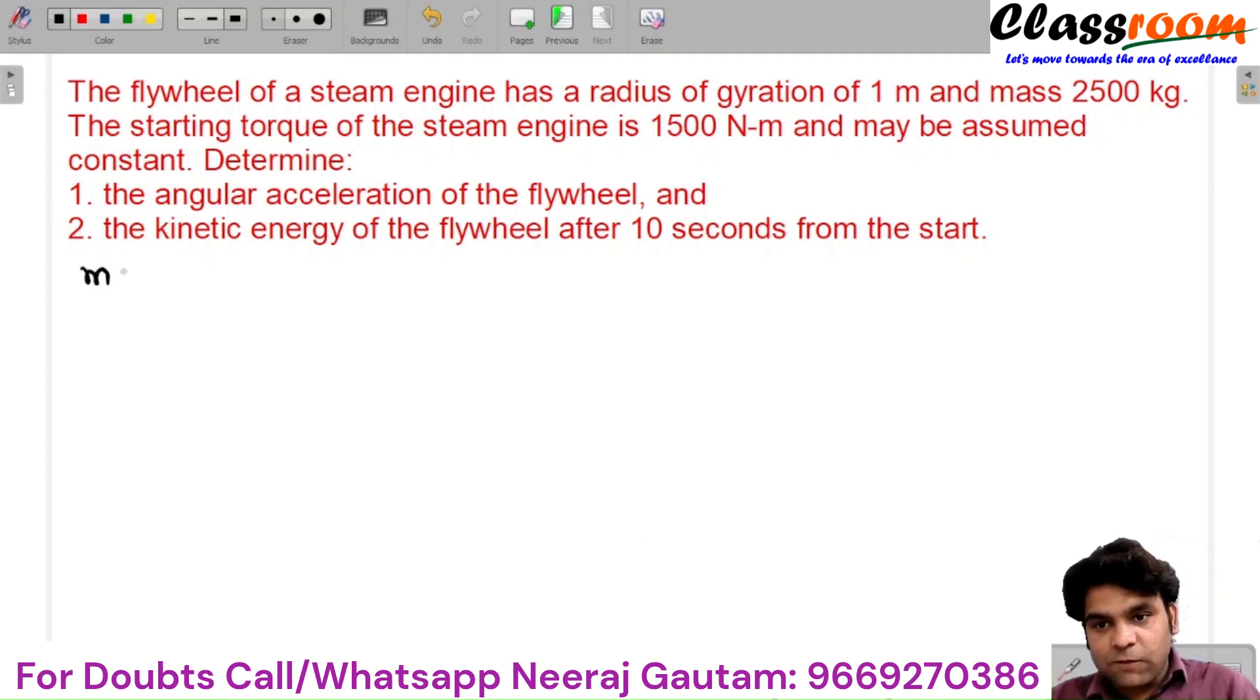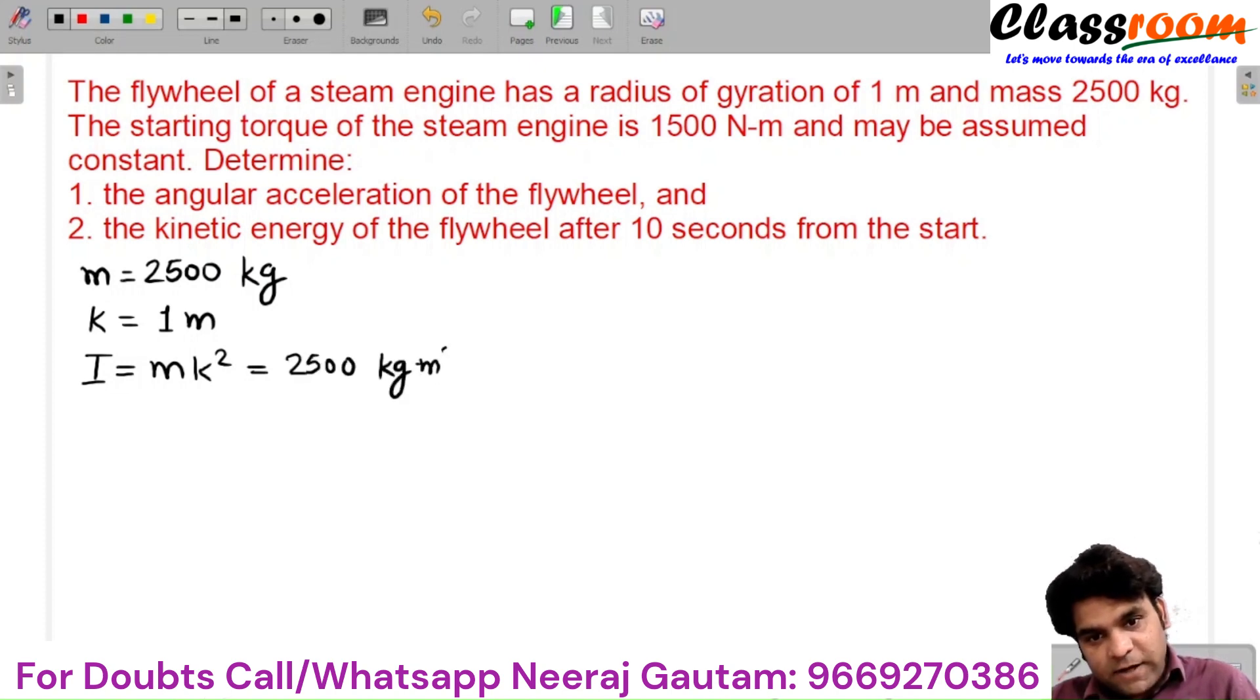So the mass of the flywheel is 2500 kg and the radius of gyration is 1 meter. You can easily determine the moment of inertia of the flywheel, which is mk², so I = 2500 kg·m².